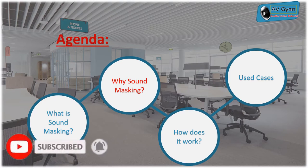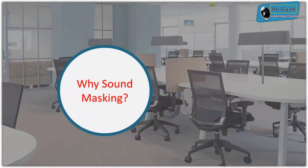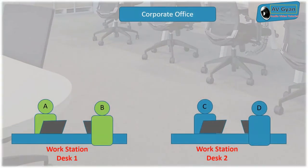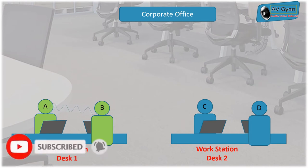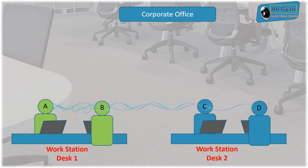This helps to create a disturbance between the speech frequencies traveling in the air. Now, why is sound masking required? In this example, we have a corporate office with an open office format. There are four employees — A, B, C, and D — sitting across two workstation desks: desk one and desk two, with two persons on each desk. A and B share desk one, C and D share desk two. Let's say person A wants to communicate confidential information to person B. Since the area is open and speech has no boundaries, it not only reaches person B but also reaches person C and D.